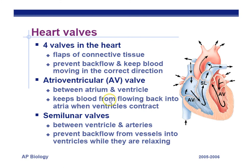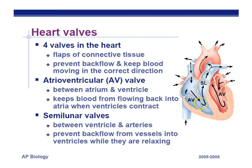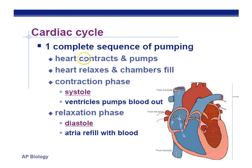Atrioventricular valve prevents backflow of blood back into the atria. Semilunar valves prevent backflow of blood back into the ventricle. It keeps everything going in the forward direction. Cardiac cycle: the contraction phase, called systole, is when the ventricles are actively pumping blood out — a big push from the cardiac muscle. The relaxation phase is called diastole, when the atria are refilling with blood. Systole and diastole are two words you need to know: contraction and relaxation phase.